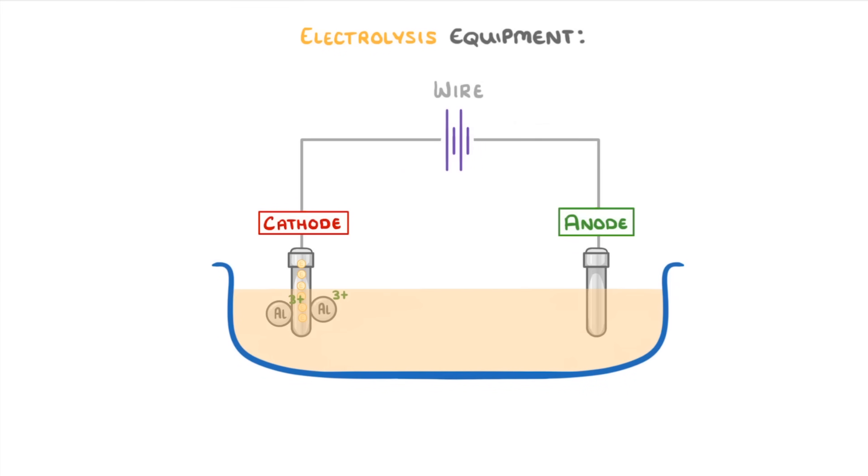In our case, it will donate 3 electrons to each aluminium 3+ ion, to form aluminium atoms, which will then slowly pool in the bottom of the beaker, as molten aluminium metal.